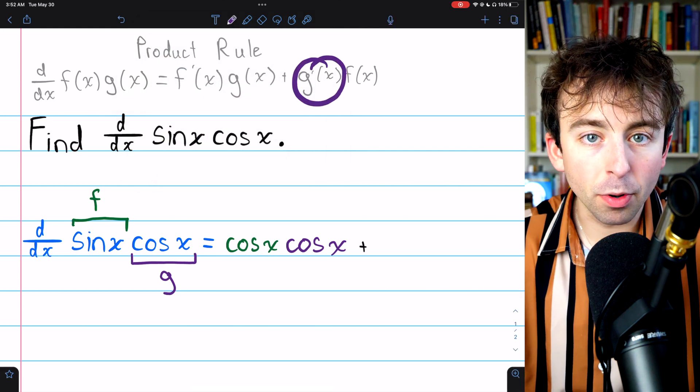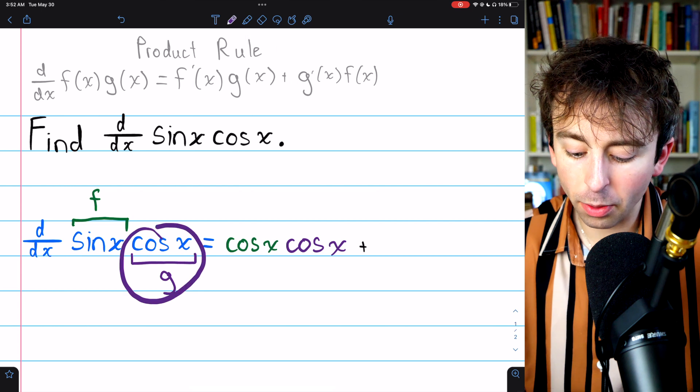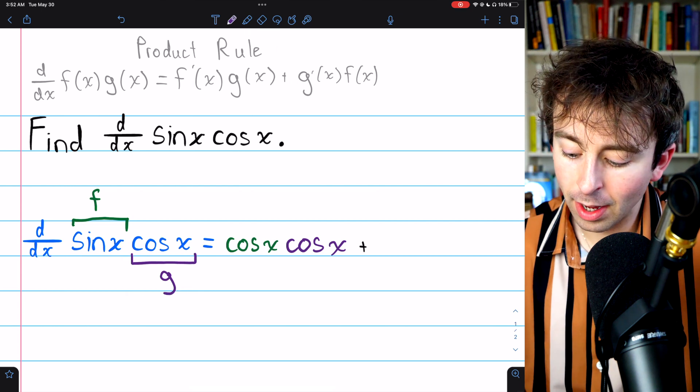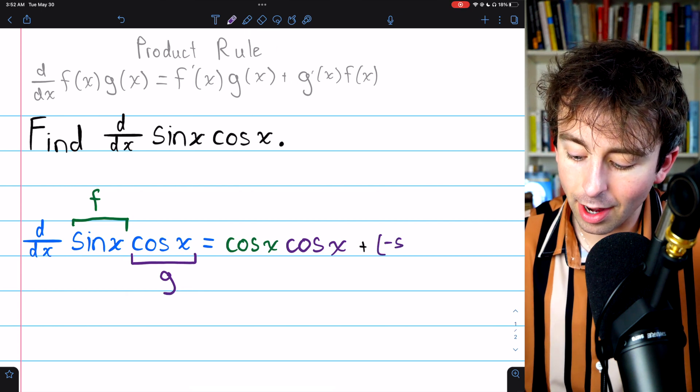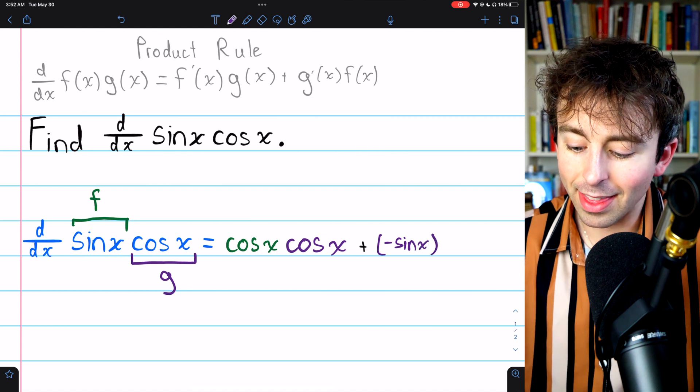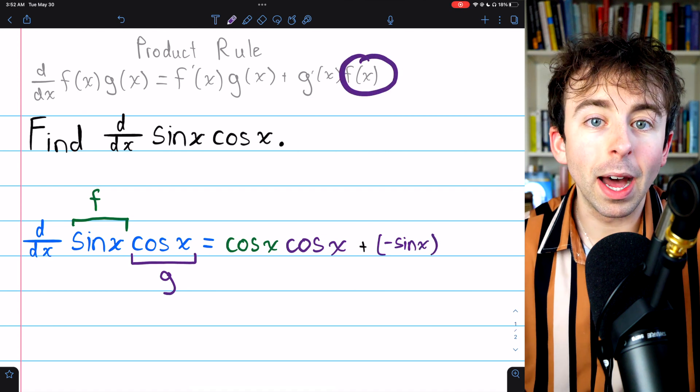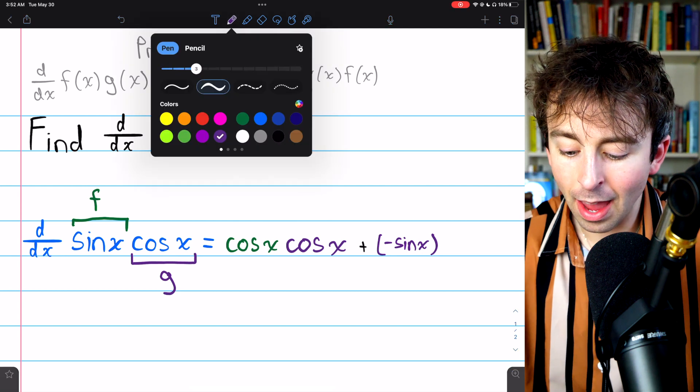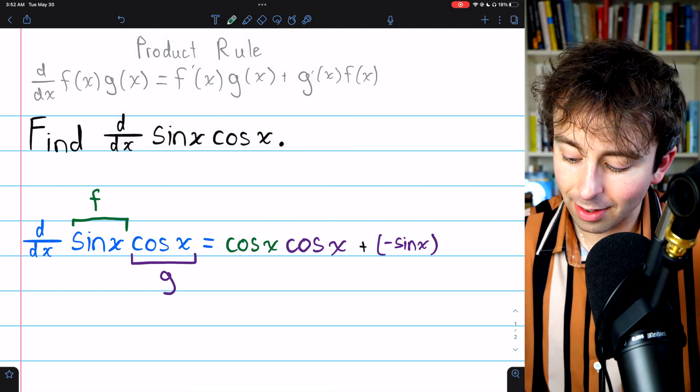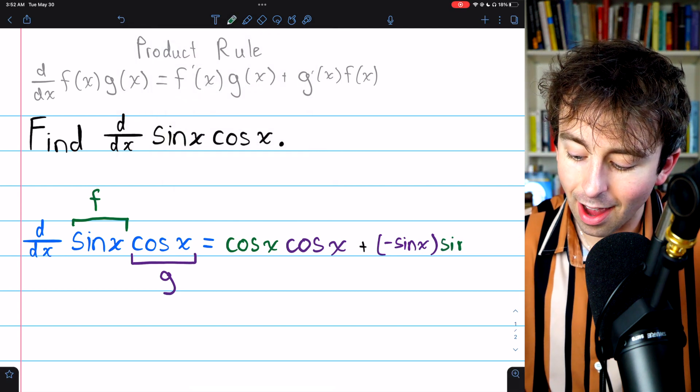Then we need to add g prime. Again, g is cosine, so what is g prime? Well, that's the derivative of cosine, so negative sine x, and then this needs to get multiplied by f. That's the last step. f, we already said, is sine x, so we just multiply this by sine x.